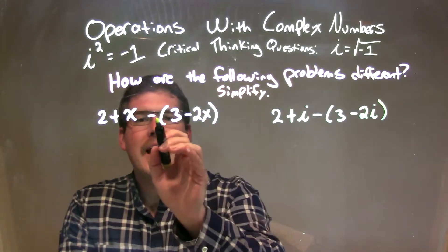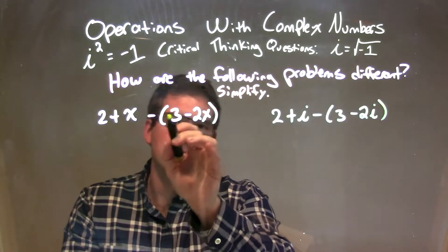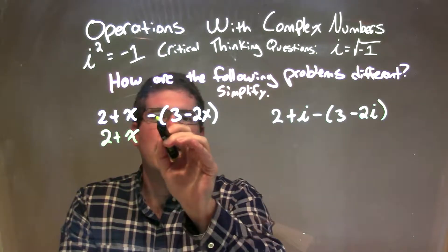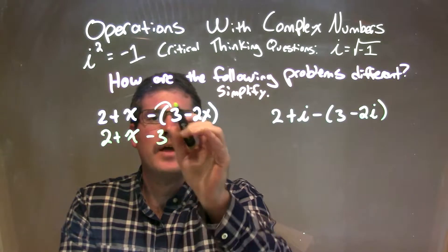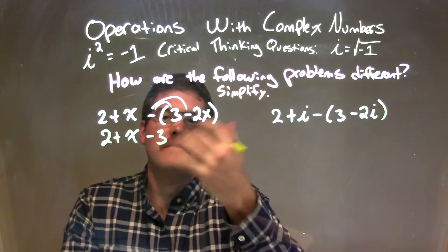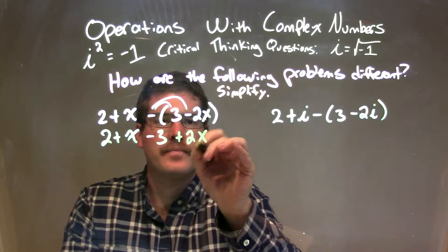Well, first thing, I need to distribute that minus sign into the parentheses. So we have 2 plus x here. That becomes a minus 3. And then subtracting a negative 2x is adding a positive 2x.